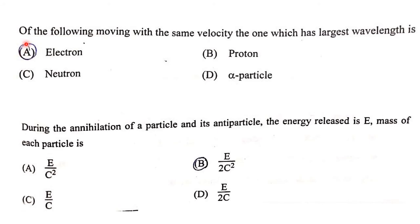The next question: of the following particles moving with the same velocity, which has the largest wavelength? We know the de Broglie wavelength λ = h/(mv). The wavelength is inversely proportional to mass. Since the electron has less mass than the proton, neutron, and alpha particle, the electron has the largest wavelength.